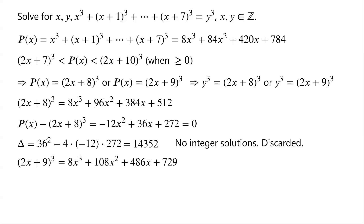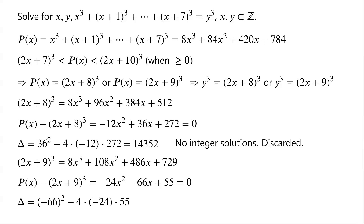(2x+9)³ equals 8x³ plus 108x² plus 486x plus 729. For y³ = (2x+9)³, the original equation becomes p(x) minus (2x+9)³ equals 0, that is, negative 24x² minus 66x plus 55 equals 0. The discriminant equals (−66)² minus 4(−24)(55), which equals 9636, which is not a perfect square. So this quadratic has no integer solutions.